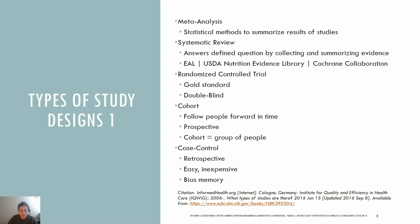Observational studies do not give participants a treatment or intervention. Instead, they look at what participants are already doing and see how it relates to their health. These types of study designs can only identify correlations or relationships between nutrition and health — they can't show that one factor causes another. Observational studies allow researchers to study large groups of people in the real world, looking at the frequency and pattern of health outcomes.